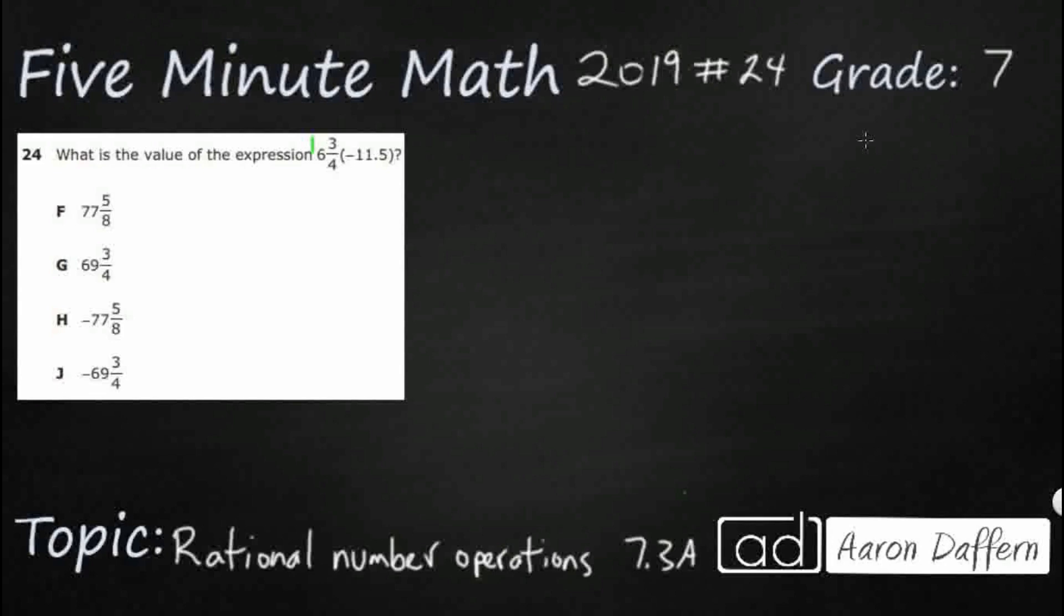So we have a basic multiplication problem here: 6 and 3 quarters times negative 11.5. That parentheses there means that we are going to multiply. And I can go ahead and eliminate two of these answer choices right now, simply because I've got a positive 6 and 3 quarters and I need to multiply that by a negative, that is my negative 11.5. Whenever we get a positive and a negative, or even a negative and a positive, those two multiplied or divided always turns into a negative.